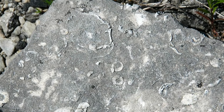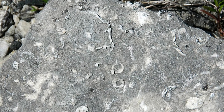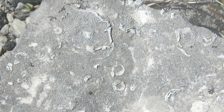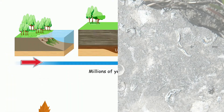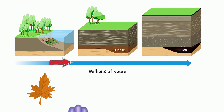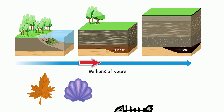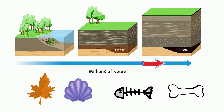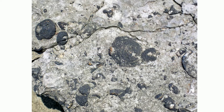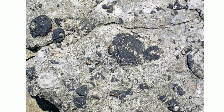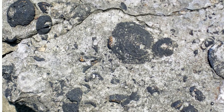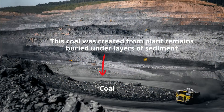Organic sedimentary rocks form from the accumulation and lithification of organic debris such as leaves, roots, shells, and other plant and animal material. The hard parts of animals such as bones and shells can become cemented together and over time make a rock. Or plant remains may be covered underground for millions of years to make an organic sedimentary rock.